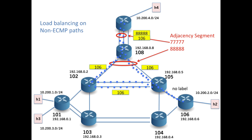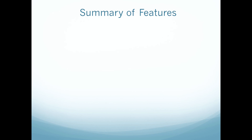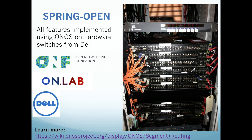We have shown that we can load balance on non-ECMP paths, again by using adjacency labels. This feature is useful for traffic engineering applications. Finally, we have also shown the power of SDN and the power of software written outside the box to get around the limitations of hardware, in the case where hardware has limits on the number of labels that it can simultaneously impose on a packet. All of these features have been implemented on hardware from Dell using ONLabs' ONOS controller.